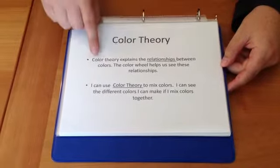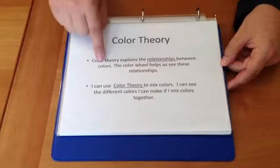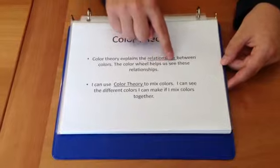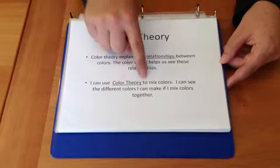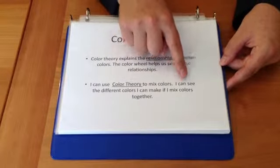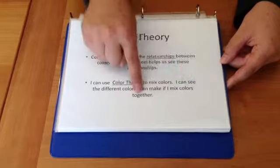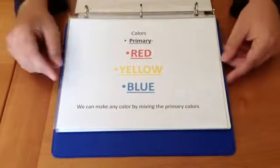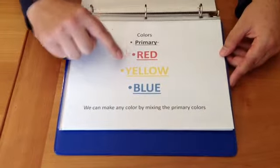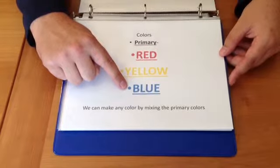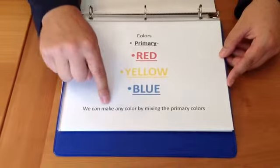Color theory explains the relationships between colors. The color wheel helps us see these relationships. I can use color theory to mix colors — I can see the different colors I can make if I mix colors together.